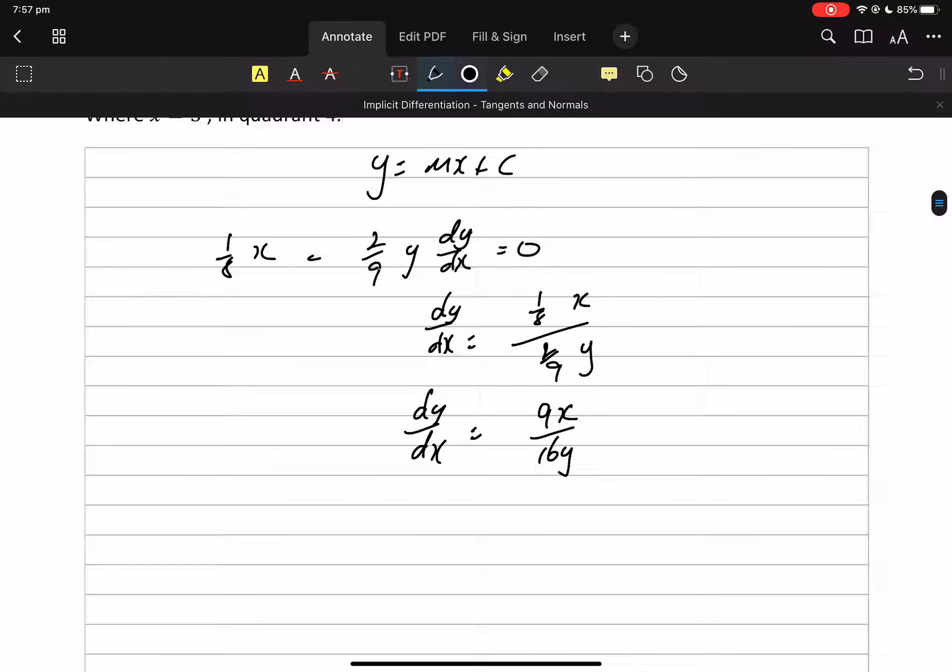Now we want to pop into that x equals 5. So our slope which is dy/dx will be 9 times 5 on 16 times, eww! We need to find that y don't we?